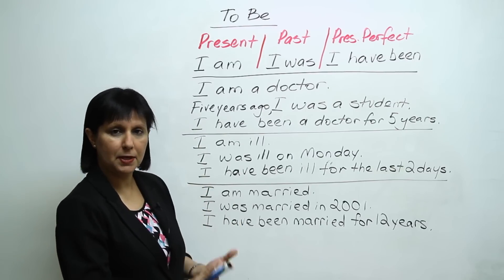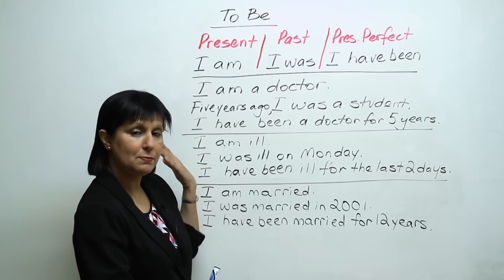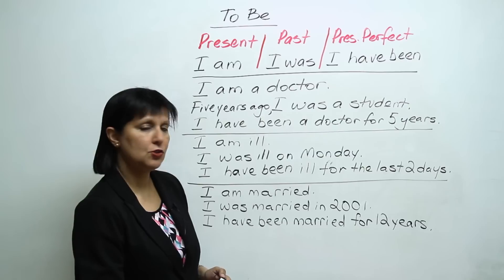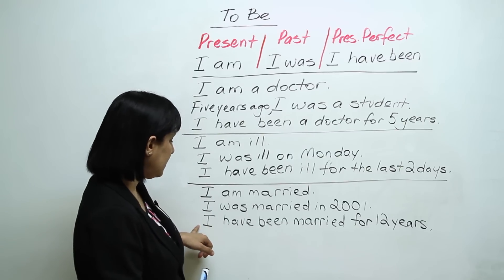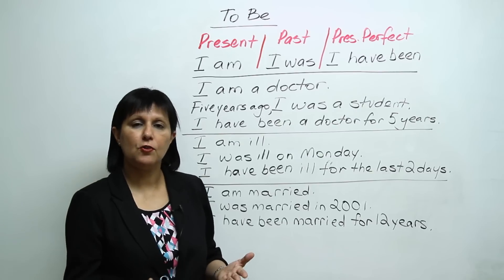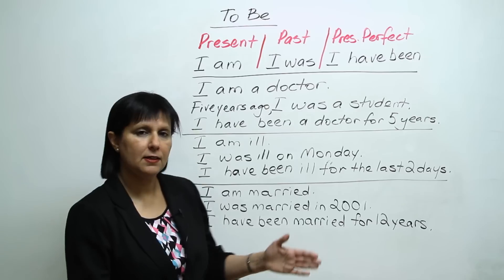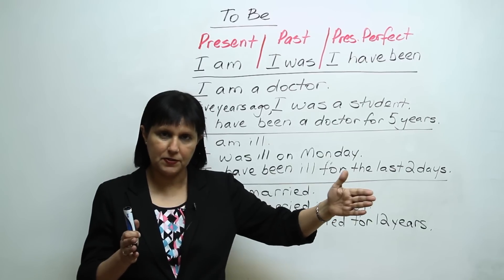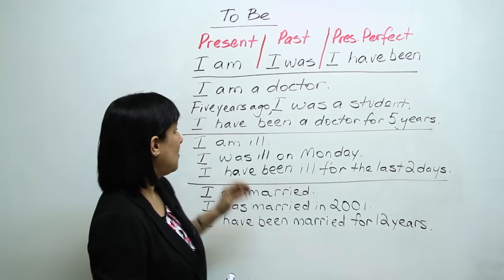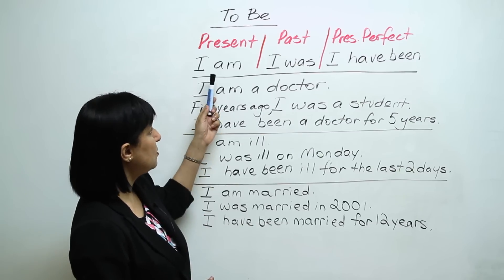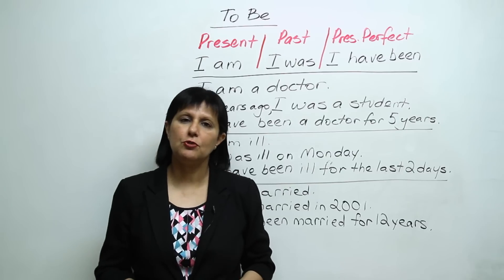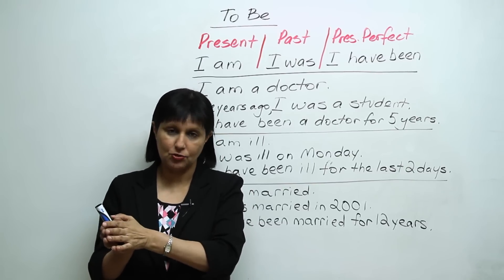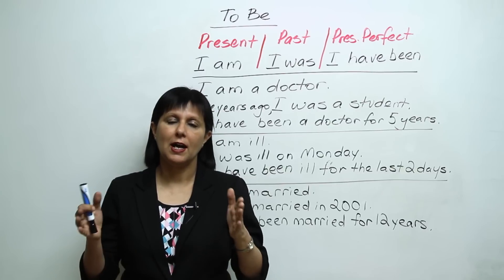Another example: 'I am married' means now. 'I was married in 2001' — usually we say 'I got married,' but people could also say 'I was married in 2001.' And 'I have been married for 12 years' — the person got married 12 years ago and has been married throughout that period of time, including right now. I hope these examples in the present, past, and present perfect have shown you ways to talk about your life — what you're doing now, what you did in the past, and what you have been doing.